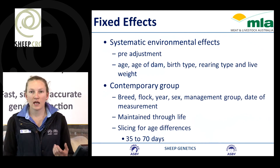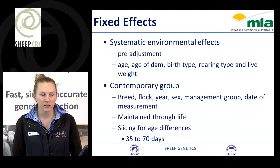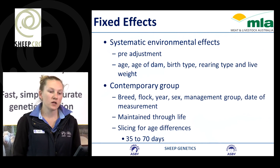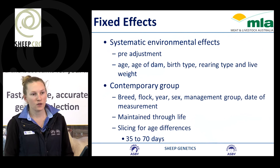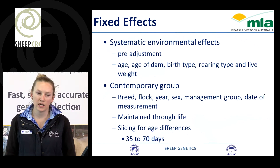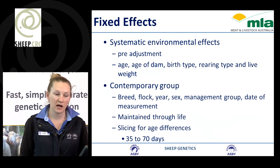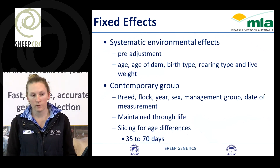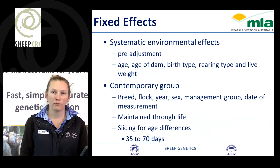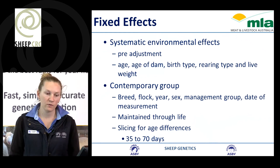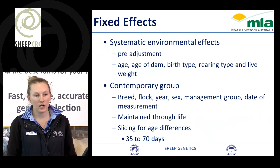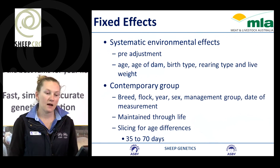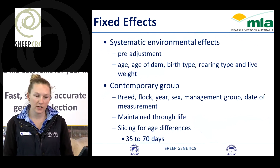How do we account for some of these things in the analysis? There are a number of fixed effects we make adjustments for. We make pre-adjustments for the age of the animal, the age of the dam, its birth type and rear type, and its live weight. We also use contemporary groups to separate out breed, the flock the animal is running in, the year it was born, its sex, the management group supplied by the ram breeder, and the date of measurement.